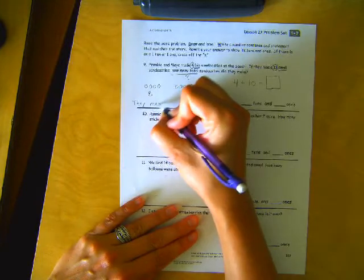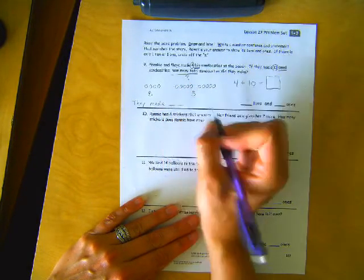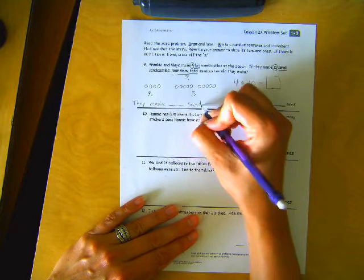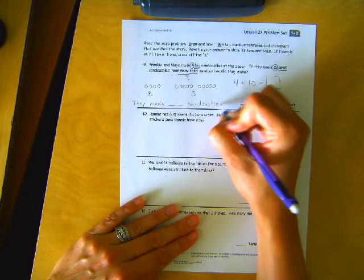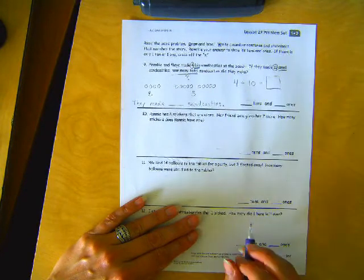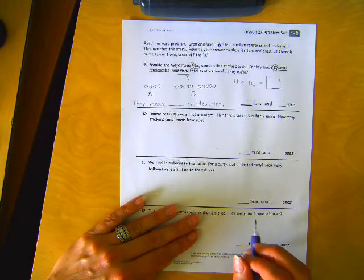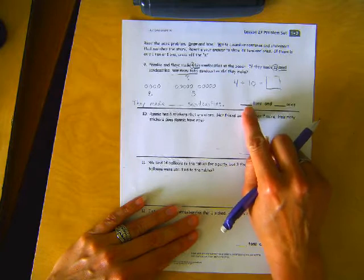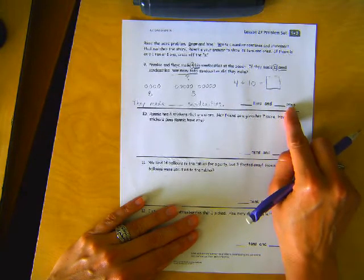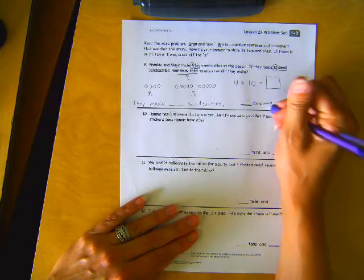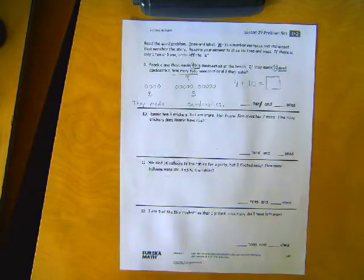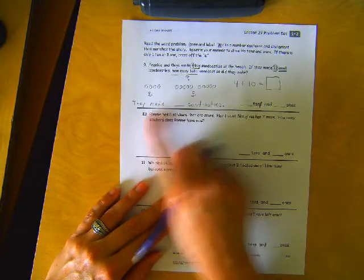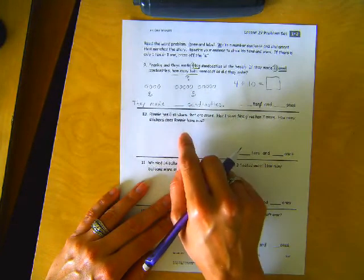Now a statement. They made, I'm putting a blank here so that you write the number, sandcastles. Period. Then it wants you to fill in how many tens and how many ones. I can give you a hint. I know there's only one ten, so we're going to cross that S off. Okay, I'm moving on to number ten. If you're not done up here, just pause it and keep finishing.